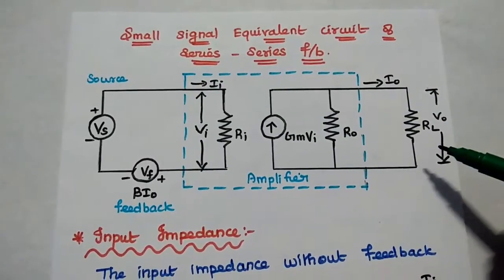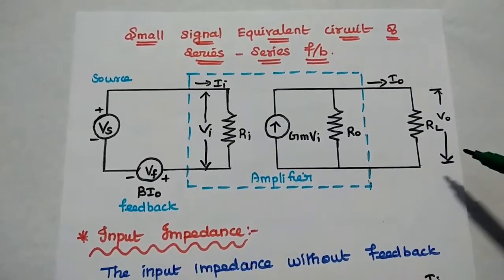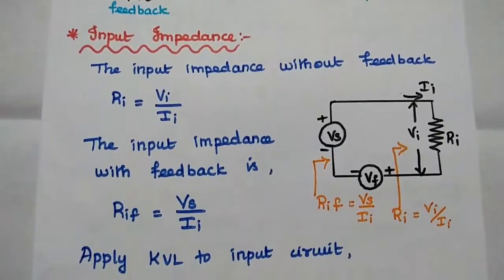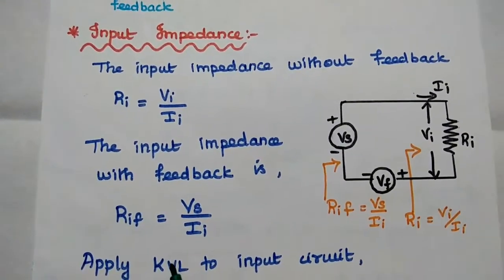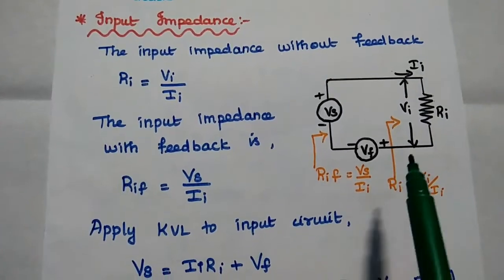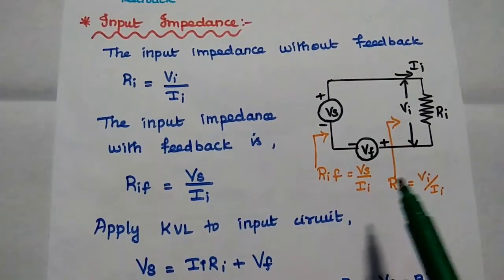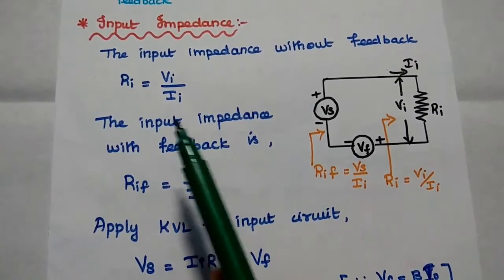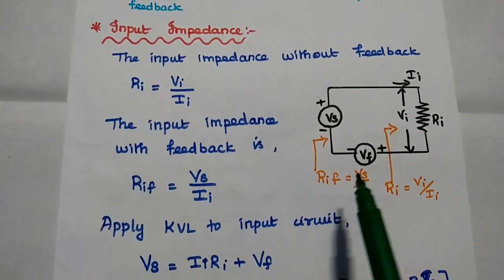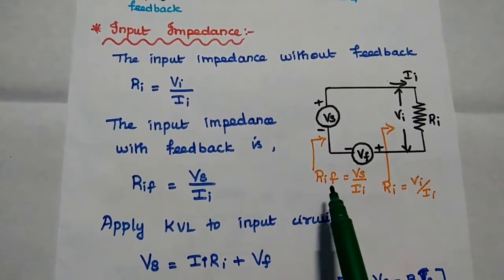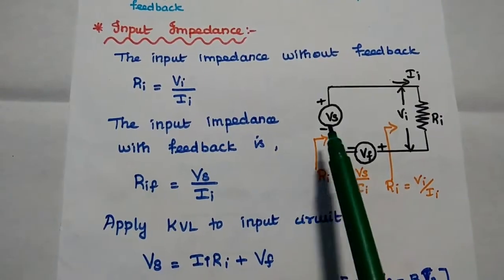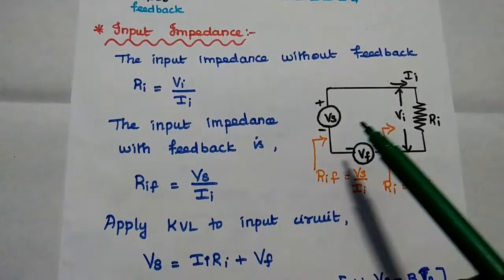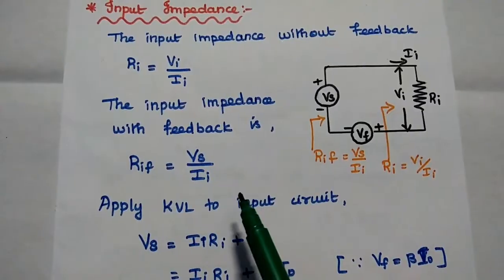The load resistance across which we can get the output voltage. Next, we are going to find out the input impedance of this series-series feedback amplifier, considering the input equivalent circuit. The input impedance without feedback Ri is equal to Vi by Ii. If we include the feedback signal, then the input impedance with feedback RiF is equal to Vs by Ii. So here the input voltage is Vs and the current is Ii.